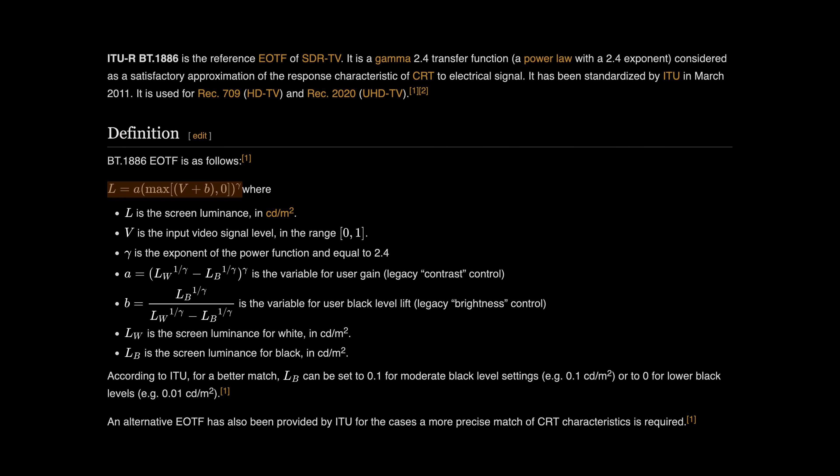A is user gain — previously known as contrast. If you have a contrast control on your display, it's doing that operation. B is user black level lift, also known as brightness. L_W and L_B are screen luminance for white and black respectively, also in candelas per square meter. So what we plotted earlier isn't the EOTF — the EOTF is for displays. What we plotted was a reverse OETF to go back to what the camera captured. Notable transfer characteristics values for H.265 include 1 for Rec.709.